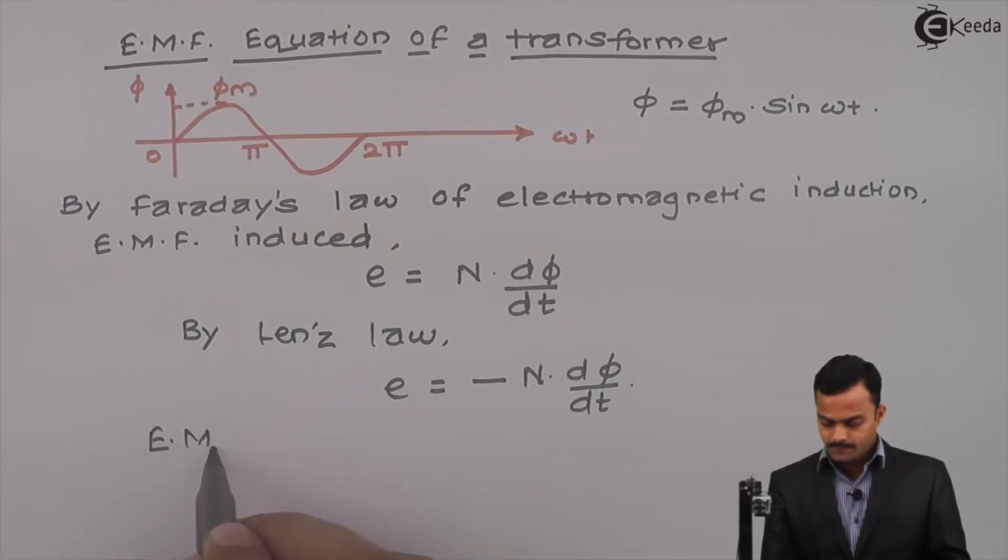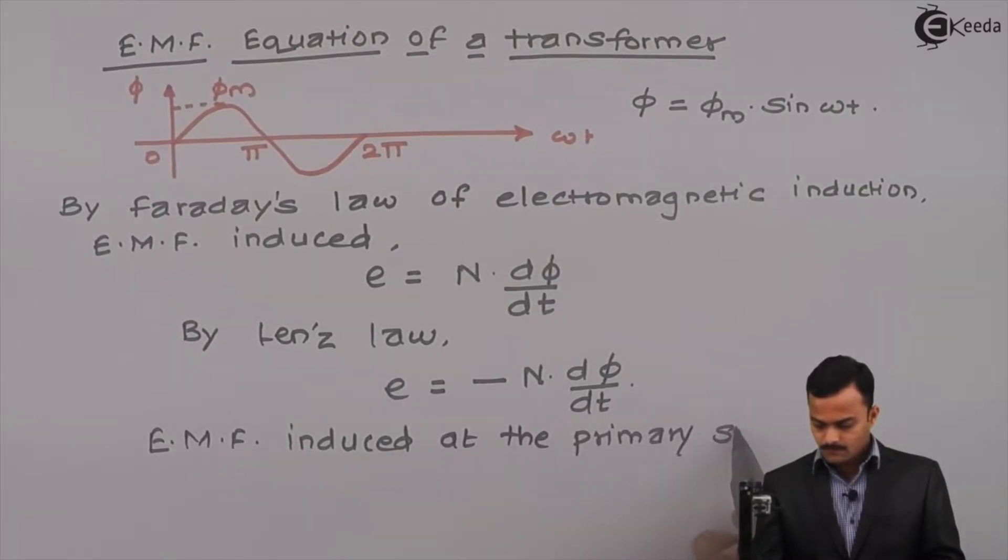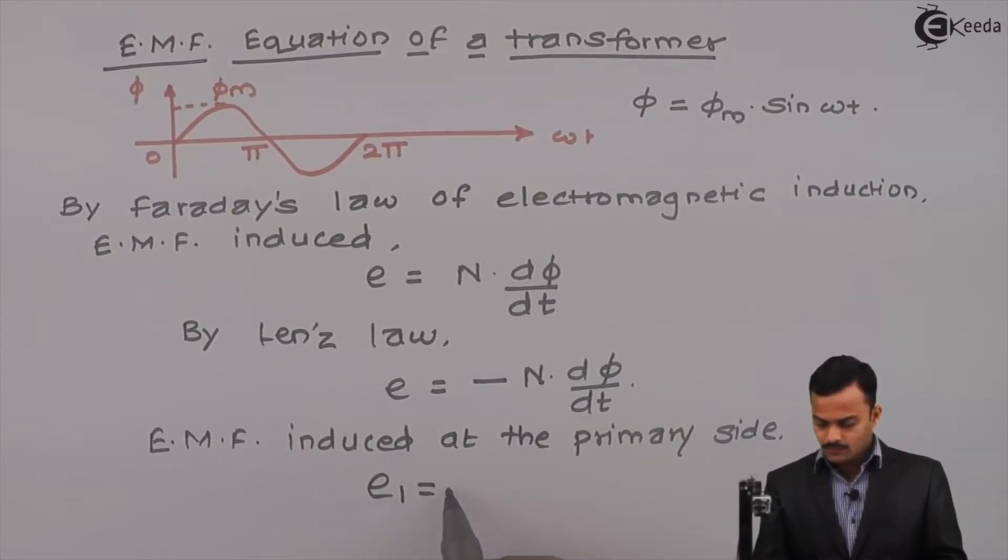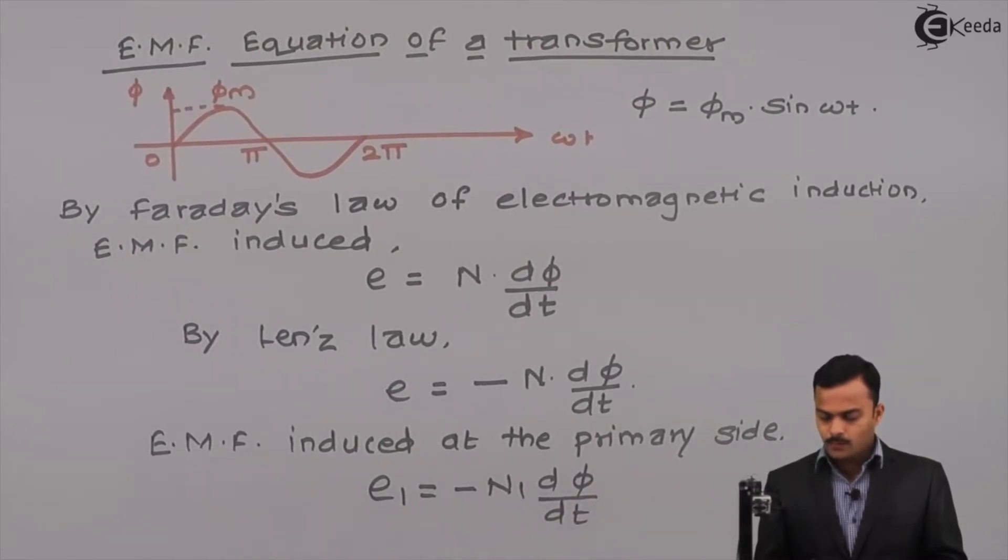EMF induced at the primary side E1 equal to minus n1 d phi by dt, where n1 is nothing but number of turns of primary winding.